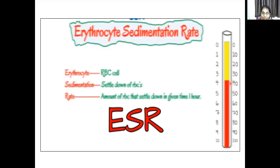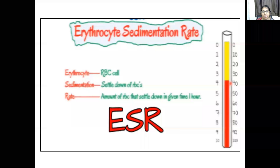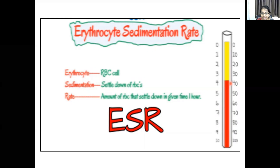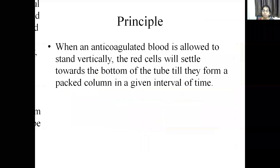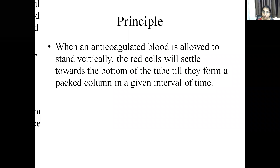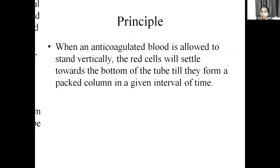What is erythrocyte sedimentation rate? Erythrocyte is the red cell, and sedimentation is the settling. ESR denotes how much RBC is settling down. The rate at which red cells settle for a given period of one hour is the erythrocyte sedimentation rate. When anticoagulated blood — using 3.8% sodium citrate — is allowed to stand vertically, the red cells settle towards the bottom of the tube, forming a packed column within a given interval of time, usually one hour.